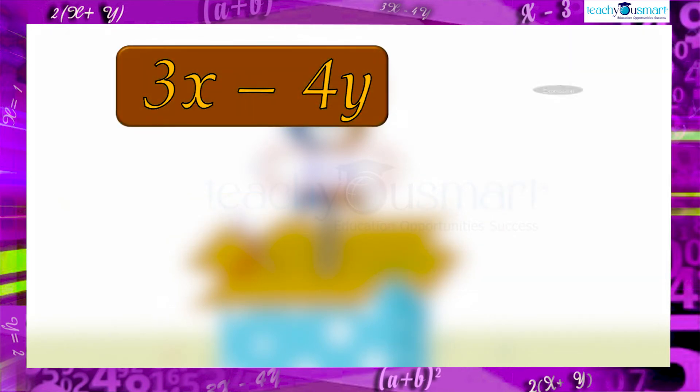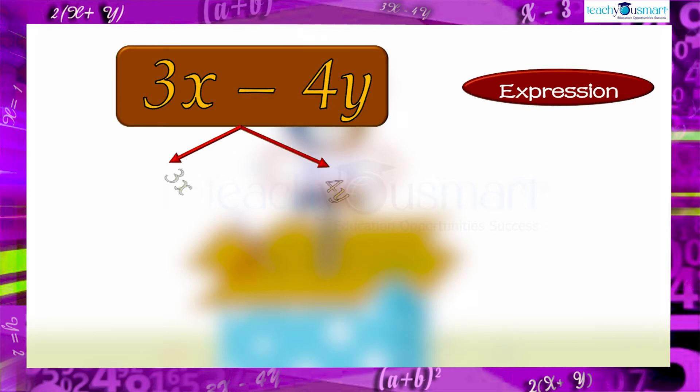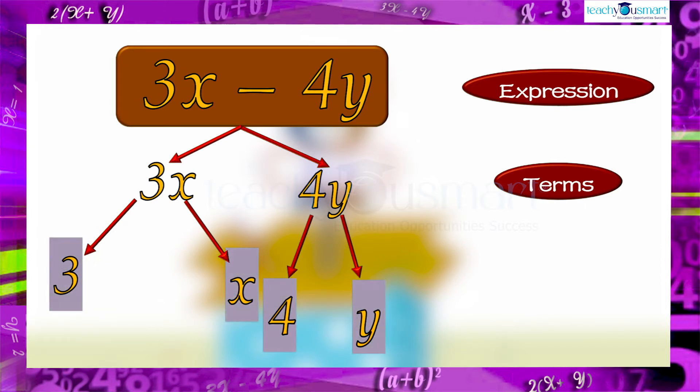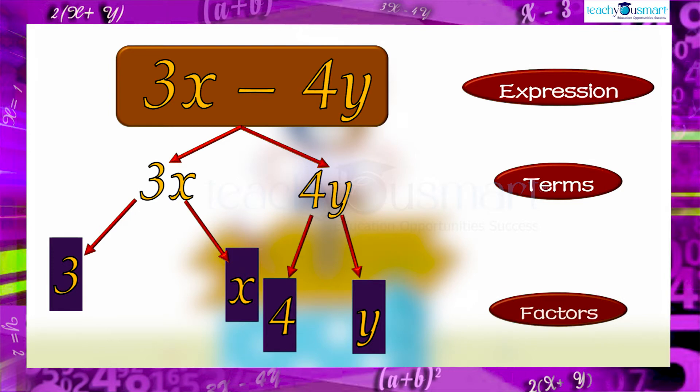In the expression 3x minus 4y, 3x and 4y are the terms. The factors in 3x are 3 and x, the factors in 4y are 4 and y, and the numerical coefficients of x and y are 3 and 4, respectively.